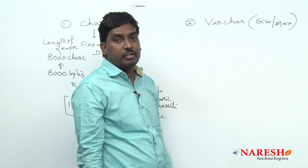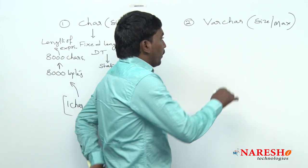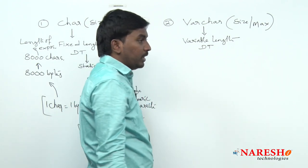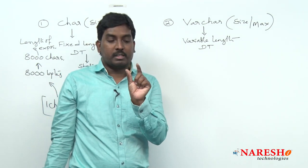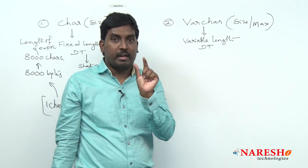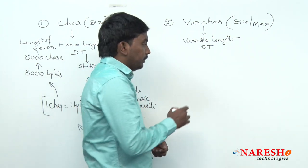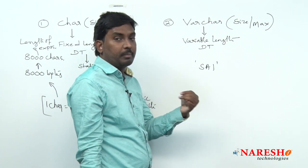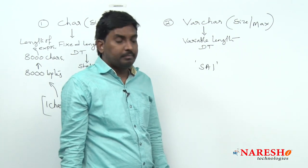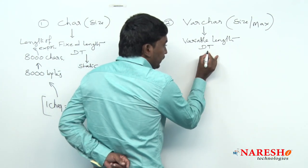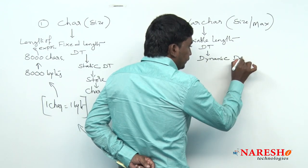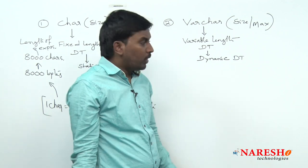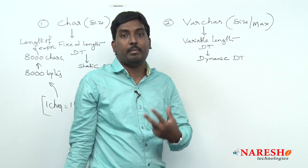Now let us look at VARCHAR step by step. VARCHAR is called a variable-length data type. Variable length means based on how many characters you are sending in your expression, memory is allocated dynamically. For example, if I send the expression 'pie' — three characters — it will allocate three bytes of memory. This is why it is called a dynamic data type.